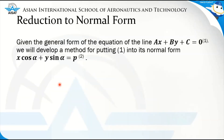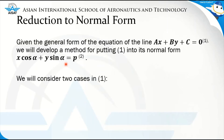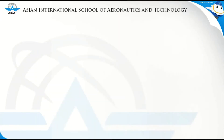Now let us discuss how to express an equation of the line into its normal form. Given the general form ax plus by plus c is equal to zero, we will develop a method for putting this equation into its normal form, which is x cos alpha plus y sin alpha is equal to p. We will consider two cases: case one and case two.